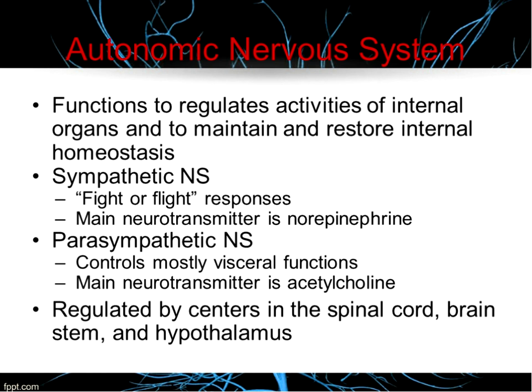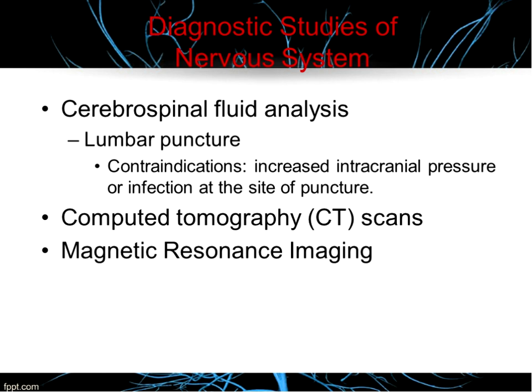There are two divisions of the autonomic nervous system: the sympathetic and the parasympathetic. The sympathetic system — think fight or flight — has norepinephrine as the main neurotransmitter. Parasympathetic is mostly visceral functions, with acetylcholine as the main neurotransmitter. They work in concert — for example, the sympathetic nervous system increases the rate and force of heart contraction, while the parasympathetic nervous system decreases the rate and force of the heart. The autonomic nervous system is regulated by centers in the spinal cord, brain stem, and hypothalamus.